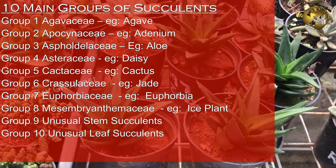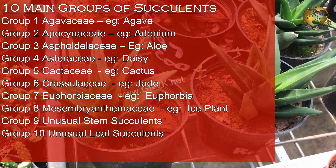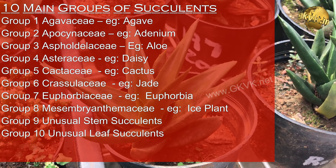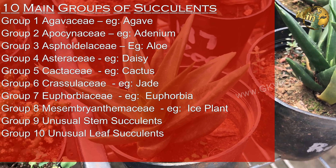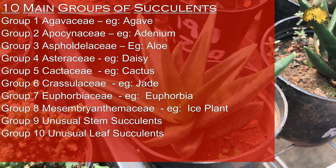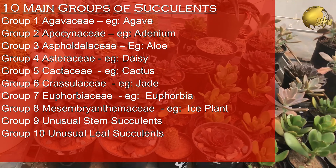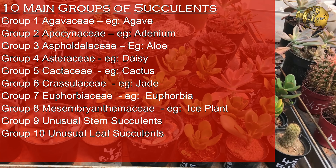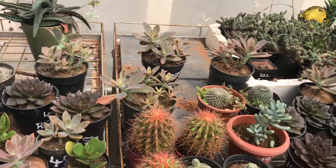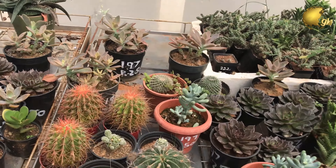Group 5: the Cactaceae family, i.e., Cacti. Group 6: the Crassulaceae family, i.e., Jade. Group 7: Euphorbia. Group 8: Mesembryanthemaceae family. Group 9: Unusual Stem Succulents. Group 10: Unusual Leaf Succulents. We should not go into the details of this classification further.